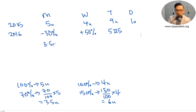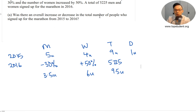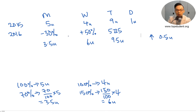So I have 3.5 units and 6 units. My total is 9.5 units — 6 plus 3.5 is 9.5. To answer the first question: was there an overall increase or decrease? There was an overall increase, and the increase is 9.5 minus 9, which is 0.5 units. Originally in 2015 there were 9 units, so now 9.5 is an increase of 0.5 units.